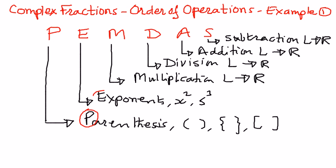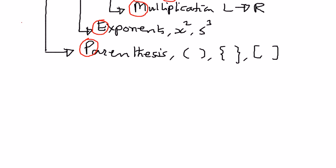P stands for parenthesis, E stands for exponents, M stands for multiplication, D stands for division, A stands for addition, S stands for subtraction. This is the order of operations which we're going to perform on the problems we encounter. In the example we want to look at, we have complex fractions and we want to simplify using the order of operations.